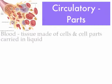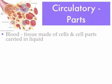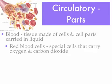Now we're going to get into the parts of blood. Along with the heart and blood vessels, another major part of the circulatory system is blood. You can see a great picture of the different parts found in blood up in the left-hand corner. Blood is a tissue made of cells and cell parts that are carried in liquid. Let's break this down a little bit further.